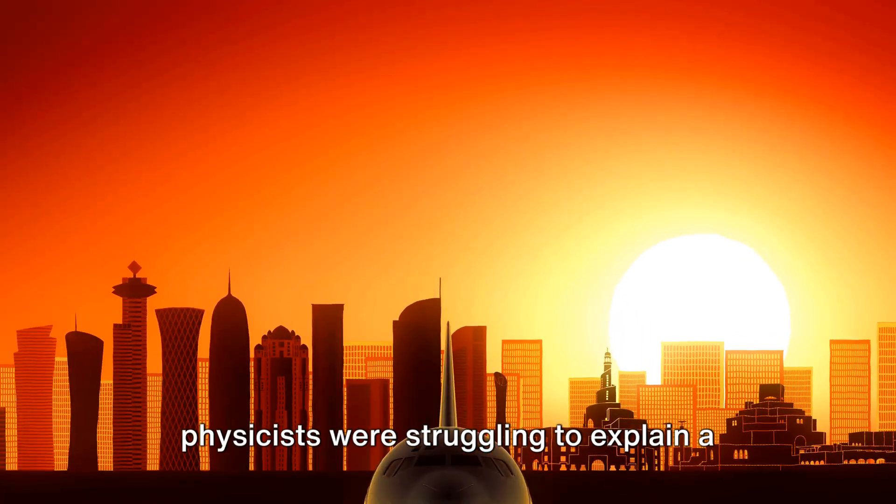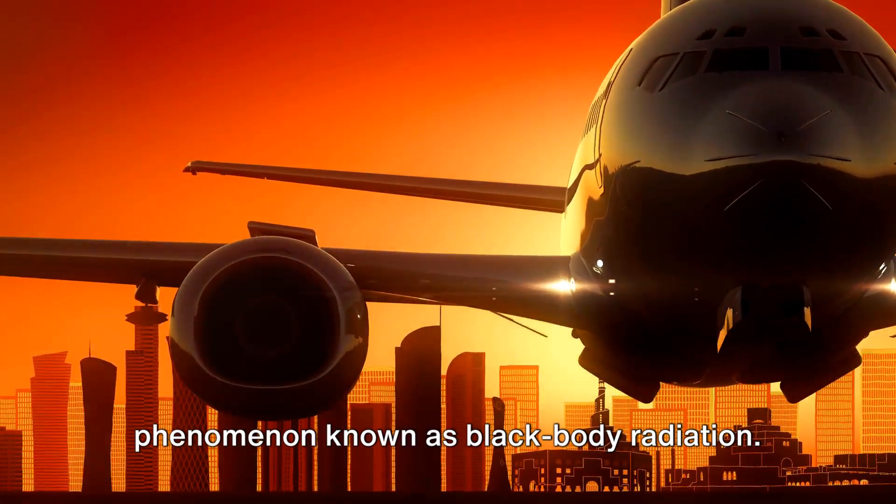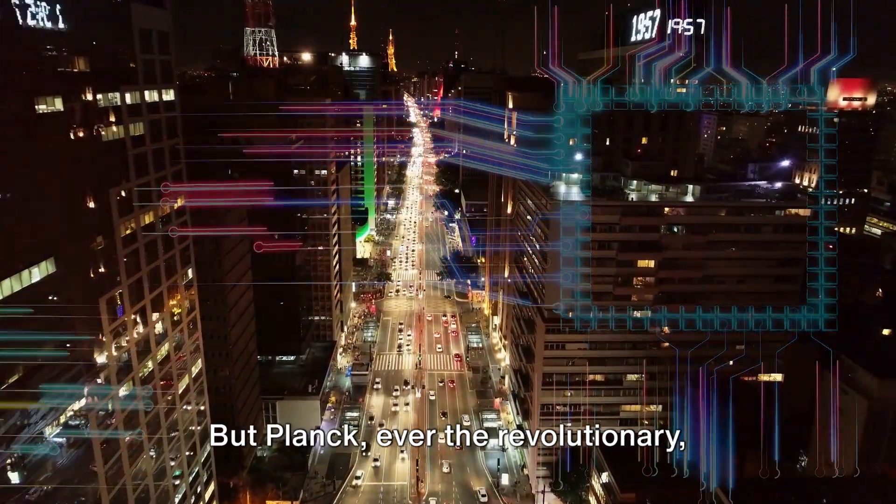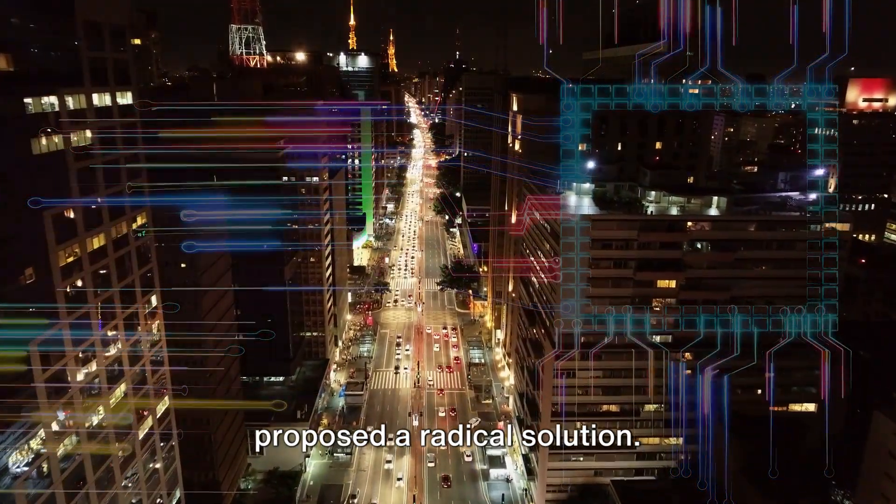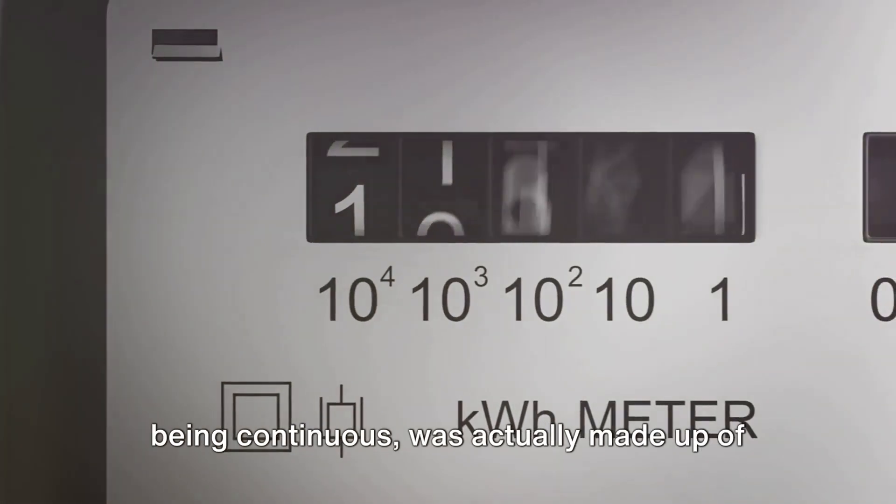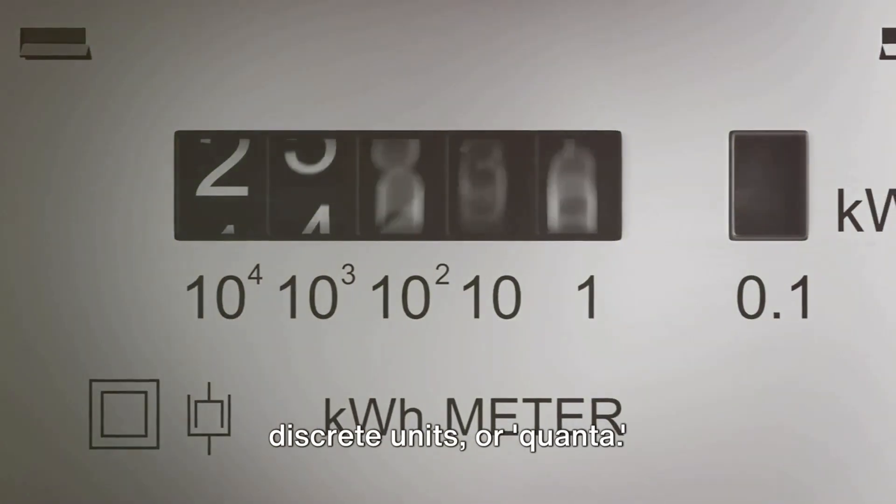In the late 19th century, physicists were struggling to explain a phenomenon known as black body radiation. Existing theories just didn't add up. But Planck, ever the revolutionary, proposed a radical solution. He suggested that energy, rather than being continuous, was actually made up of discrete units, or quanta.